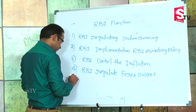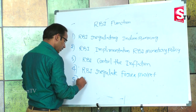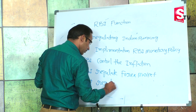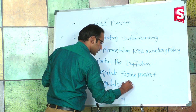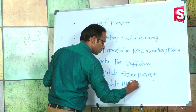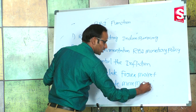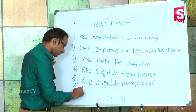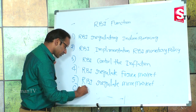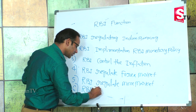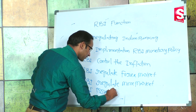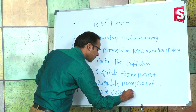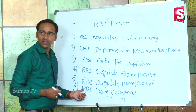The fifth function is that the RBI regulates the money market. The money market is also regulated by the RBI. The sixth function is that the RBI issues currencies — different types of currency notes are issued by the RBI.